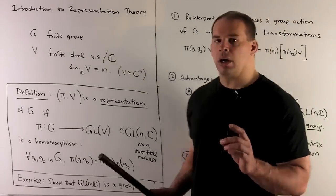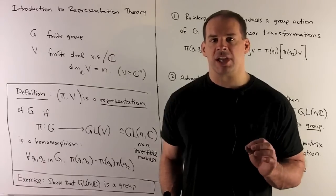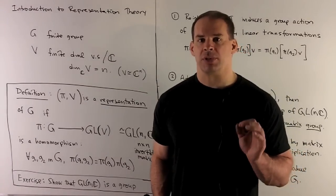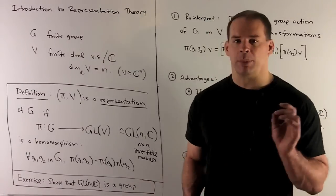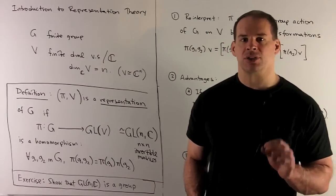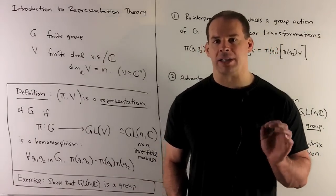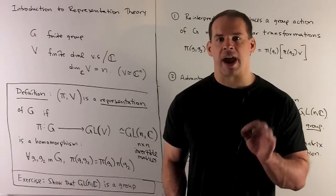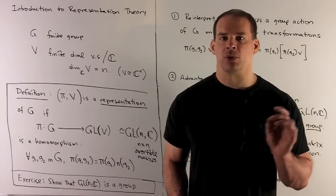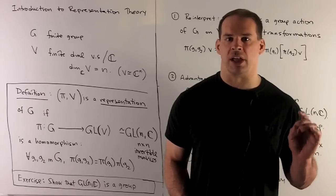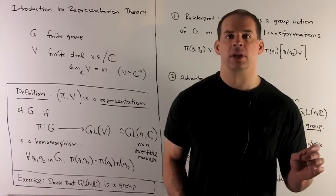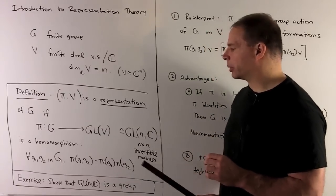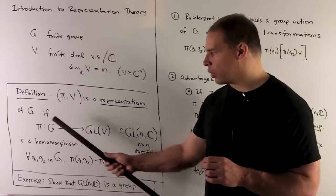For this map to be a representation, we have to have that π is a homomorphism. So if we take any g₁, g₂ in our group and apply π to the product, it's going to give us the same answer as if we apply π to each element and then multiply. So π just carries the group structure from G to the group structure of GL(V) or GL(N,ℂ). Exercise: show that GL(N,ℂ) is a group, since we need that if we're going to have a homomorphism.